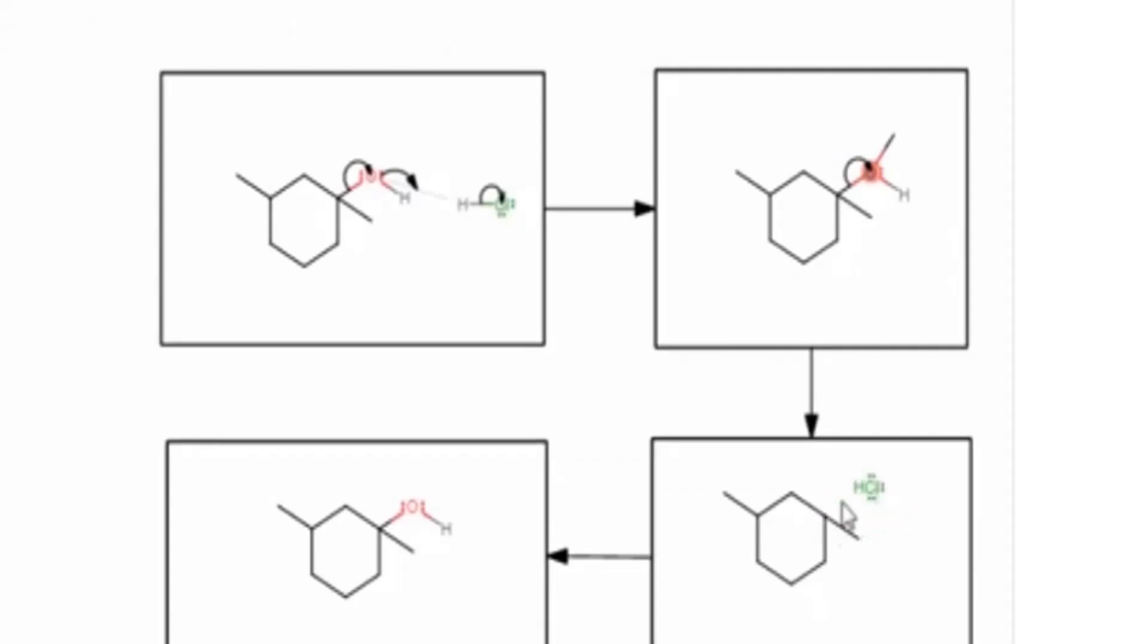Make sure that all boxes are connected to each other using either a reaction or resonance arrow. In this example, boxes and reaction arrows were pre-populated. Some mechanisms require students to draw them.